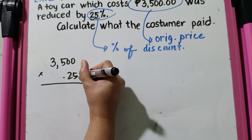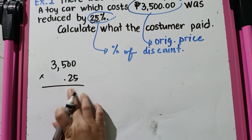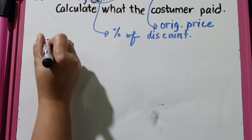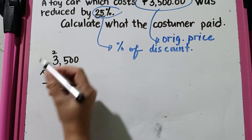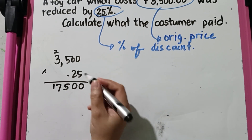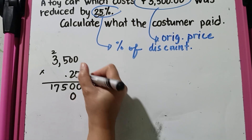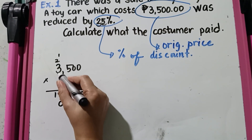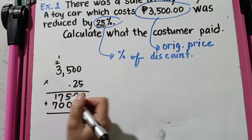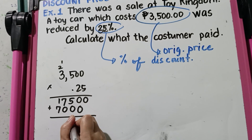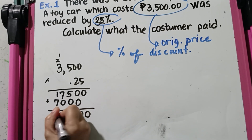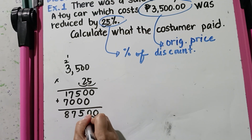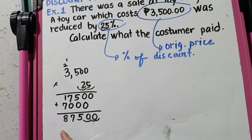Now let's multiply. 5 times 0 is 0, 5 times 0 is 0, and 5 times 5 is 25 — carry up 2. So 5 times 3 gives us 15, plus 2 we have 17. Next, multiply 2: 2 times 0 is 0, 2 times 0 is 0, 2 times 5 gives us 10 — carry up 1. 2 times 3 is 6, plus 1 that is 7. Adding the partial products gives us 0, 0, 5, 7, 8. Count the number of decimal places in our factors: 1, 2. Indicate the same number of decimal places in our product. That gives us 875 pesos.